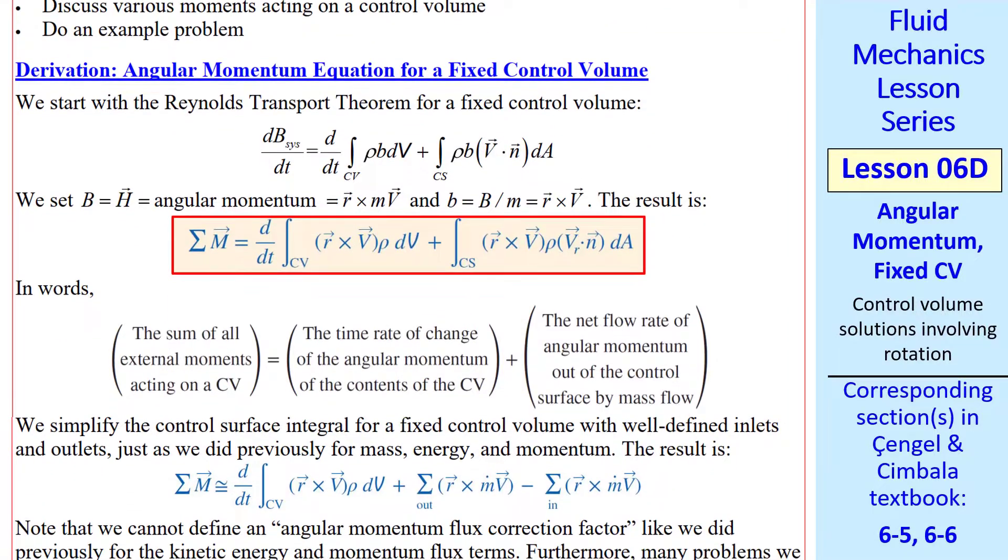The result is given here, where we've put the relative velocity here, just in case you want to do some moving control volume problems. But those are beyond the scope of this lesson. Let's look at the terms. This first term is the sum of all external moments acting on the control volume. The second term is the time rate of change of the angular momentum of all the contents within the control volume. And the third term is the net flow rate of angular momentum out of the control volume surface by mass flow.